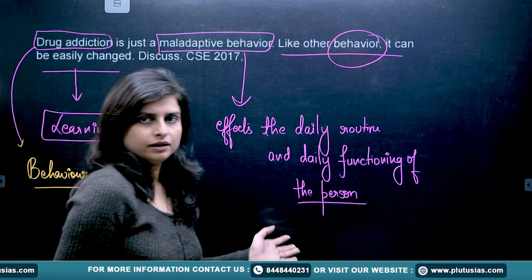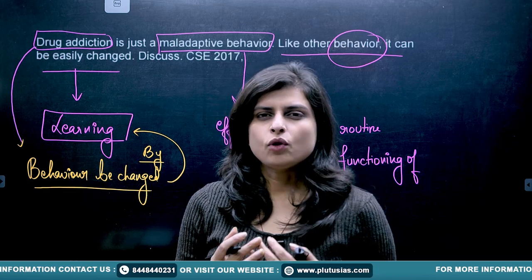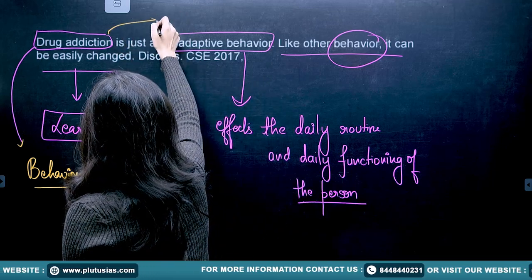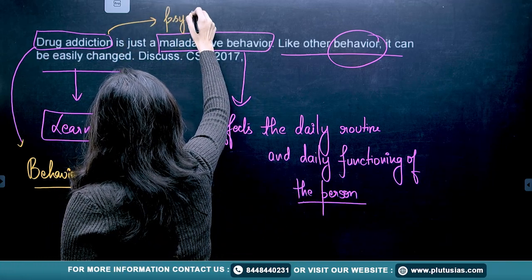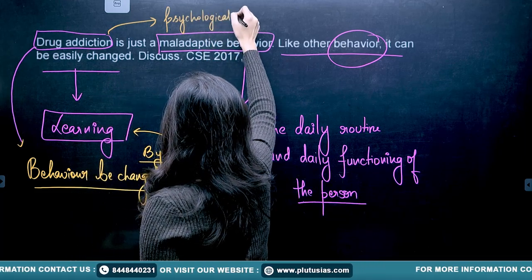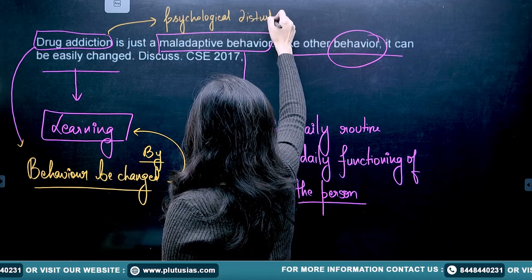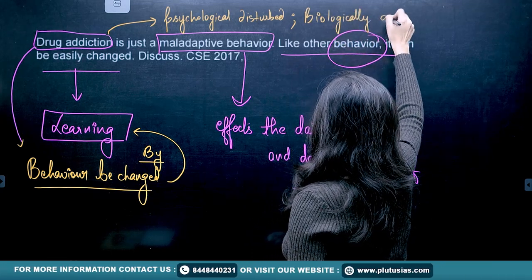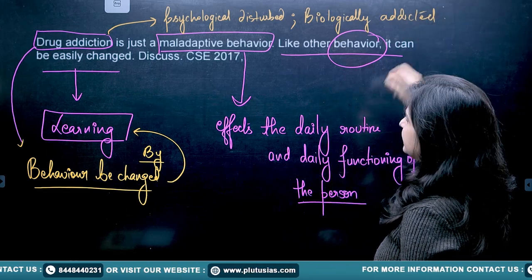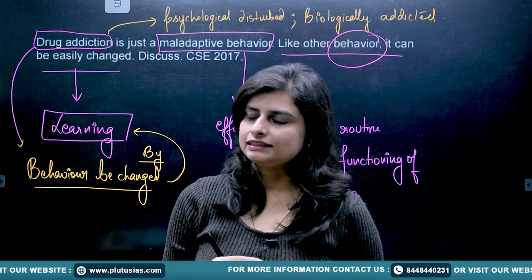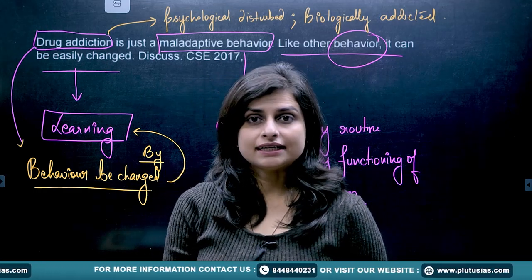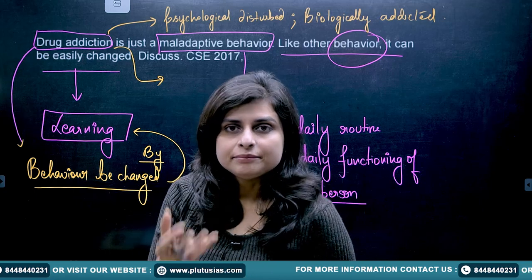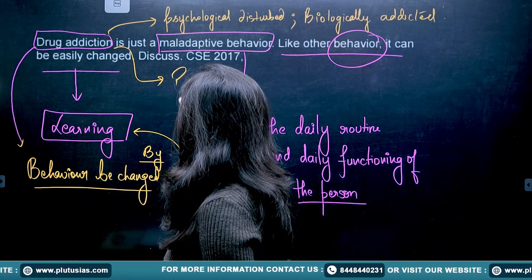Let's see how. First, you need to understand what issues drug addiction brings. The person might be psychologically disturbed and biologically addicted. Even though the person is trying to get out of the drug addiction, there is a phase of relapse — a moment where the person is attempting to get rid of the addiction but still experiences relapse.